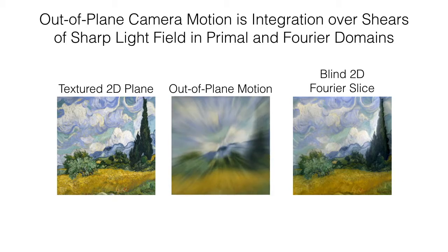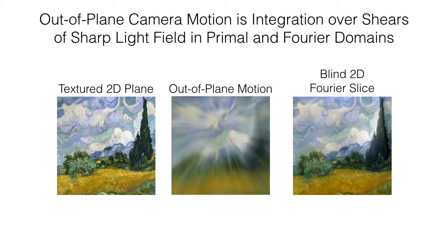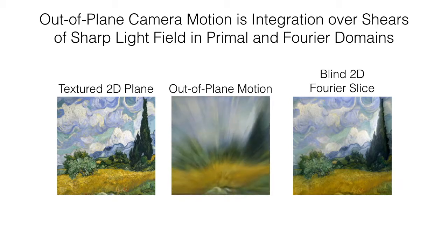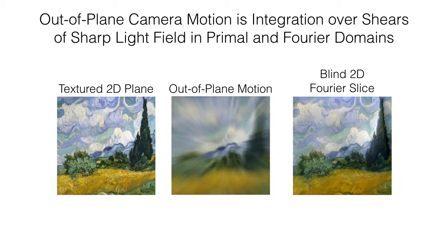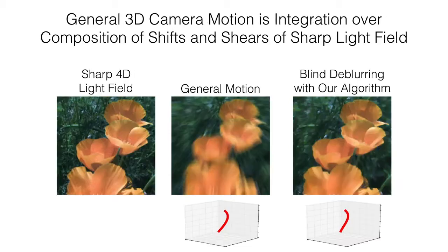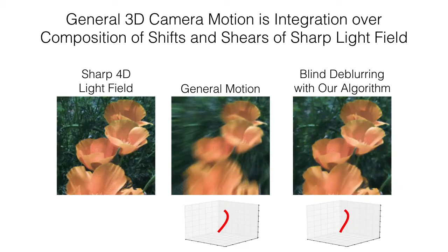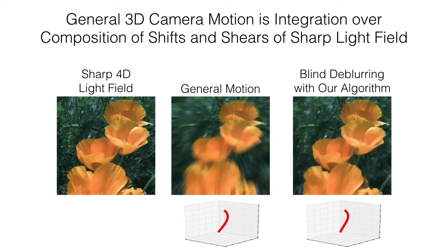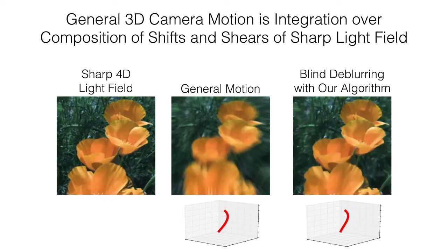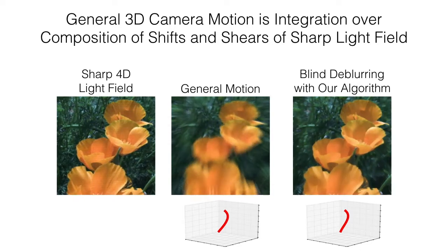The original and recovered textured 2D planes are not animated because they are 2D textures and not light fields. General light fields of 3D scenes captured with 3D camera motion are integrals over compositions of shears and shifts of the sharp light field.